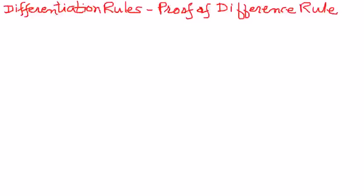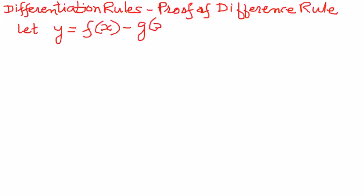So let us state the function. Let y be equal to the difference of two functions, f of x minus g of x. Let the two functions be f of x and g of x, and the difference of those two functions we will write as f of x minus g of x.